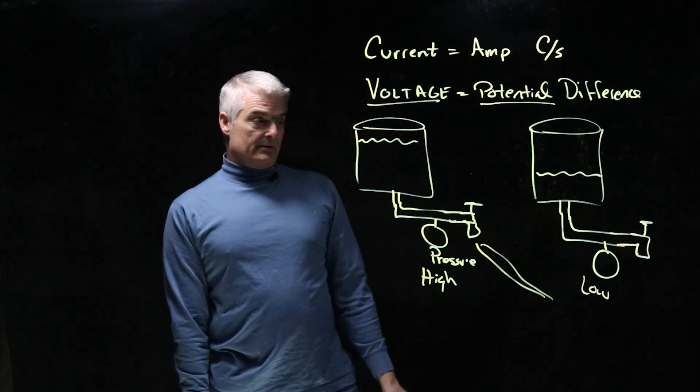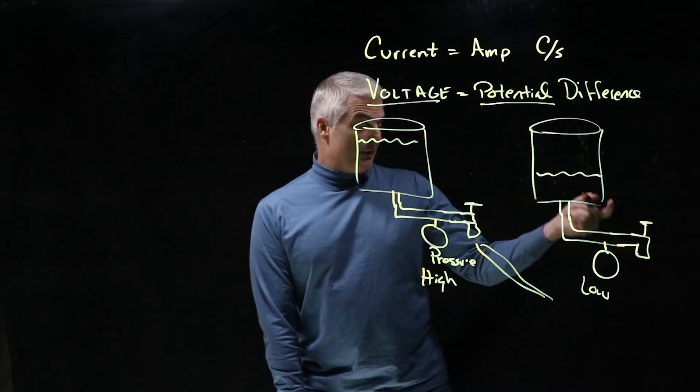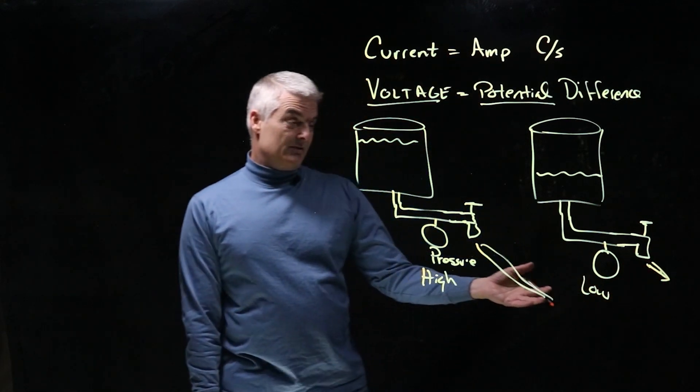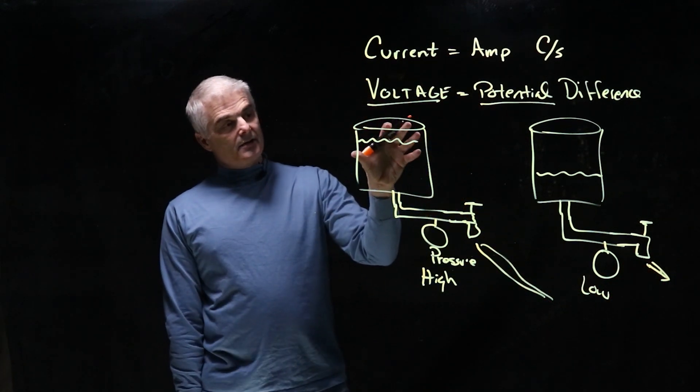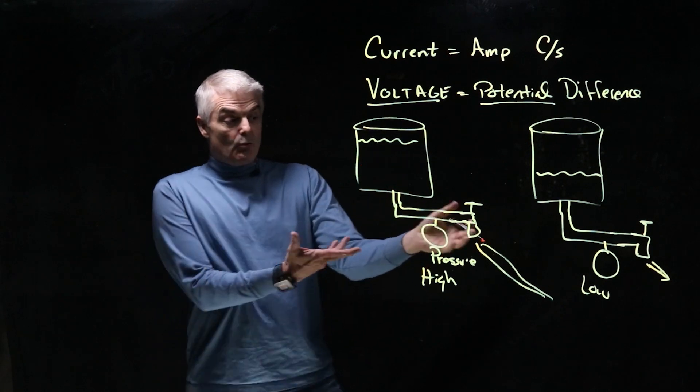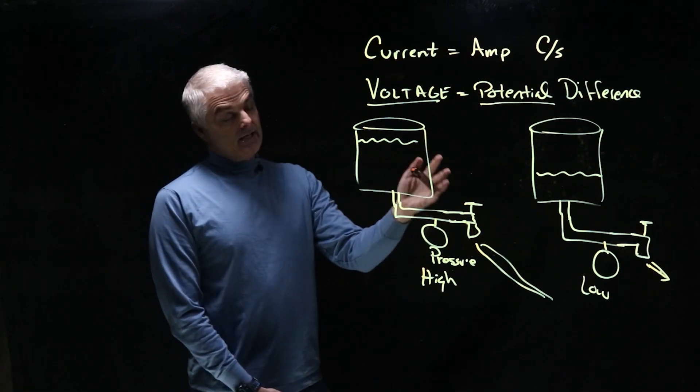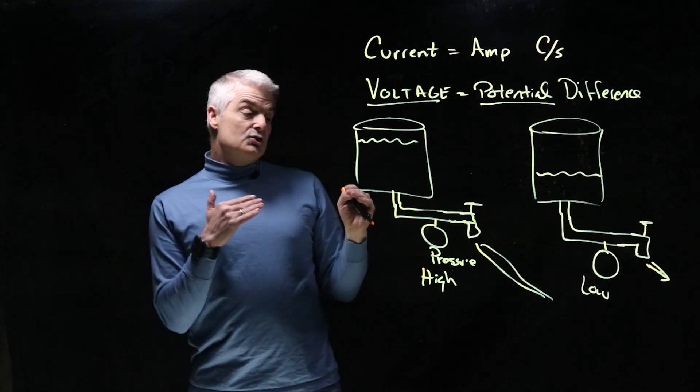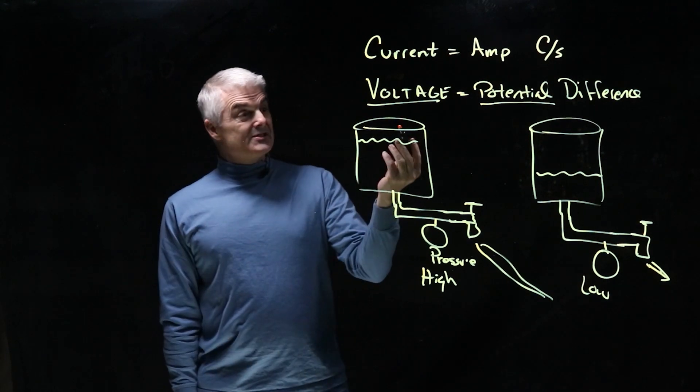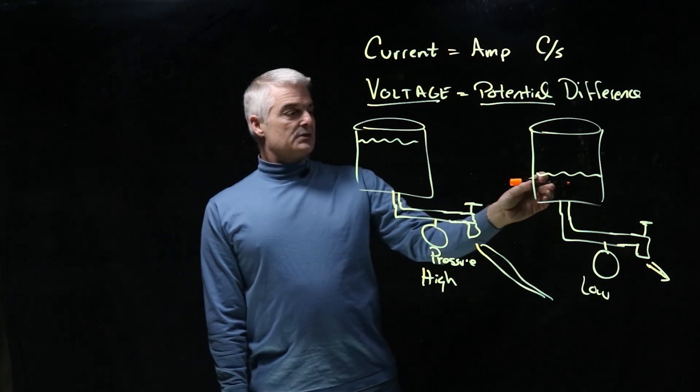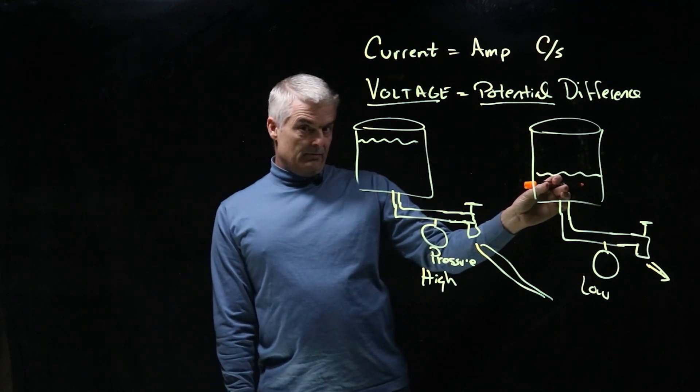If I were to open up this spigot, a lot less water would flow out. So this has a higher potential energy. Now whether the spigot is on or off, it has the potential to do the work. So this is like a high voltage battery and this is a low voltage battery.